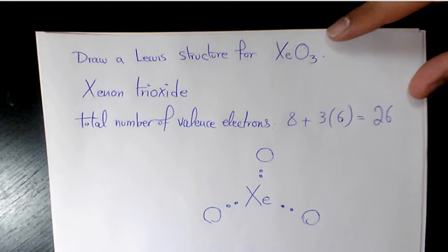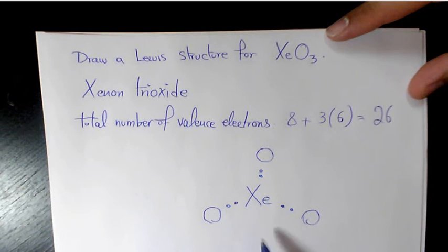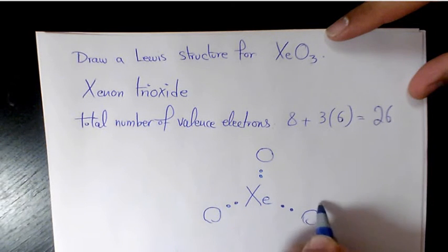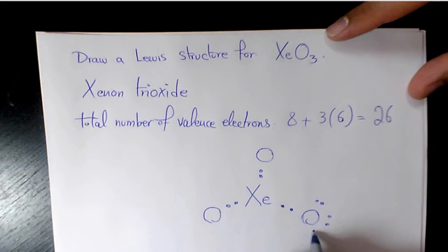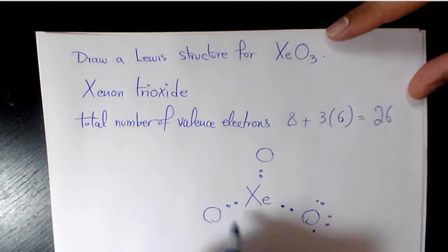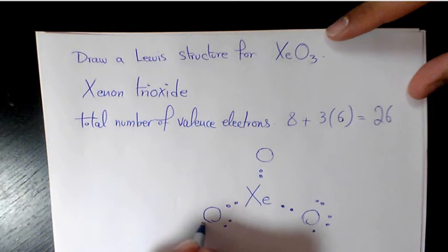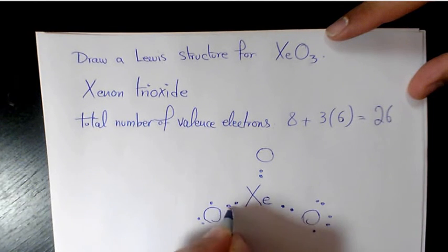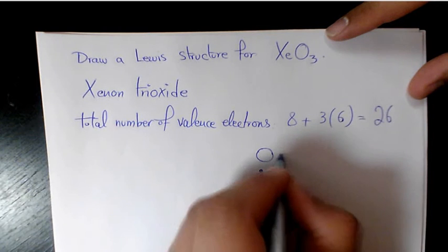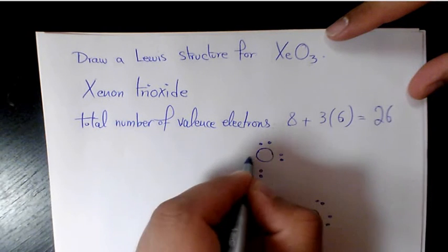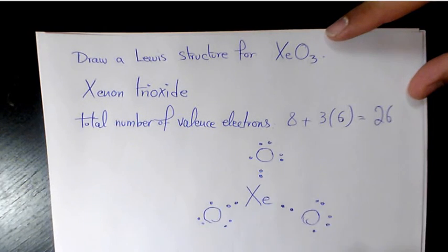Next, we need to place the remaining valence electrons as lone pairs on the surrounding atoms — not on the central atom, but on the surrounding atoms. So each oxygen gets three lone pairs: that's six electrons per oxygen, giving us 7 electrons accounted for per oxygen including the bond.